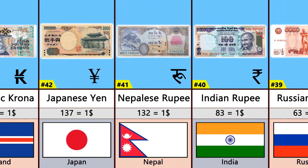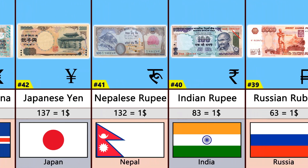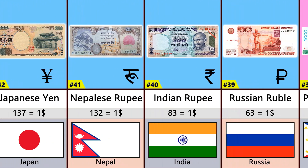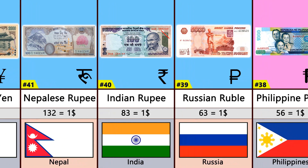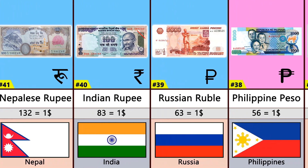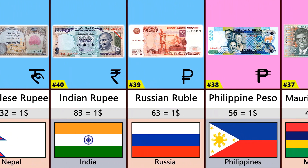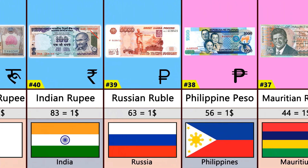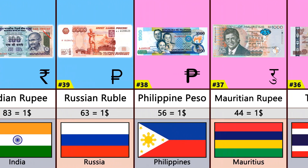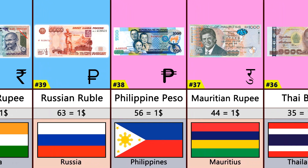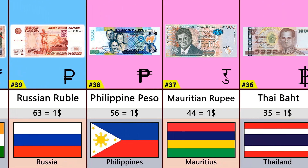Number 39: Russian Ruble. Number 38: Philippine Peso. Number 37: Mauritian Rupee. Number 36: Thai Baht.